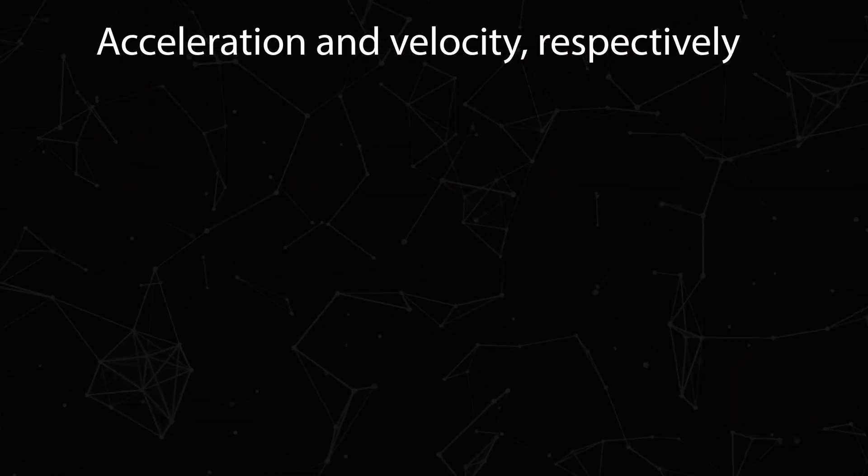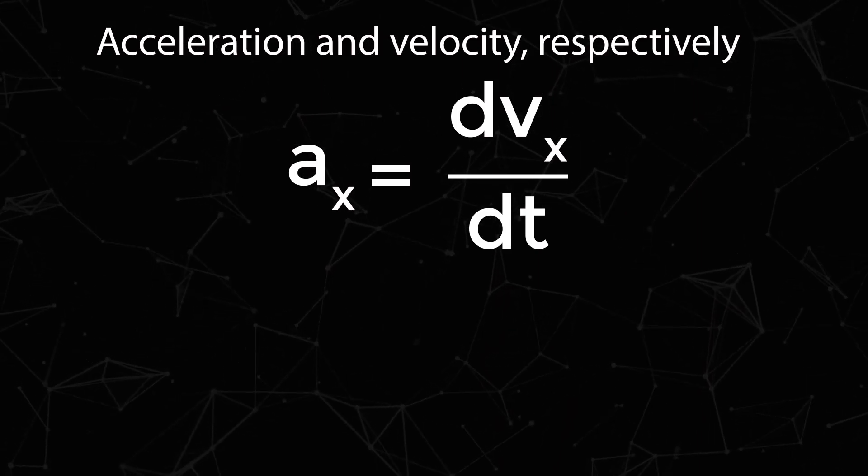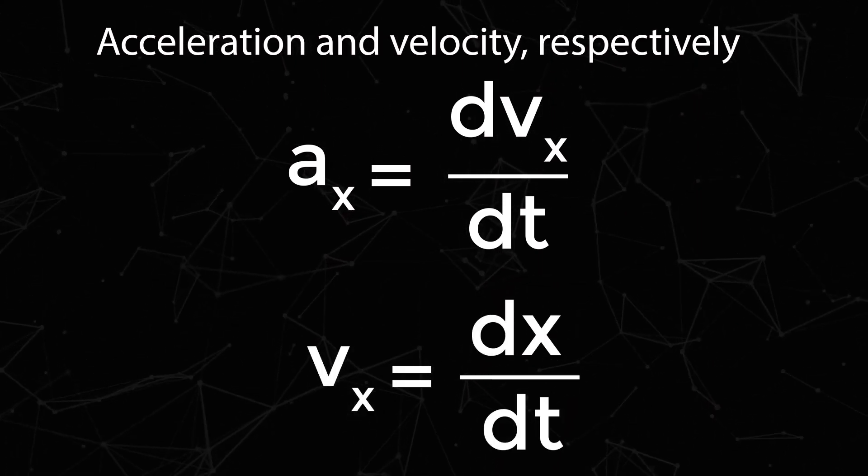Acceleration and velocity respectively: ax equals dvx by dt, vx equals dx by dt.